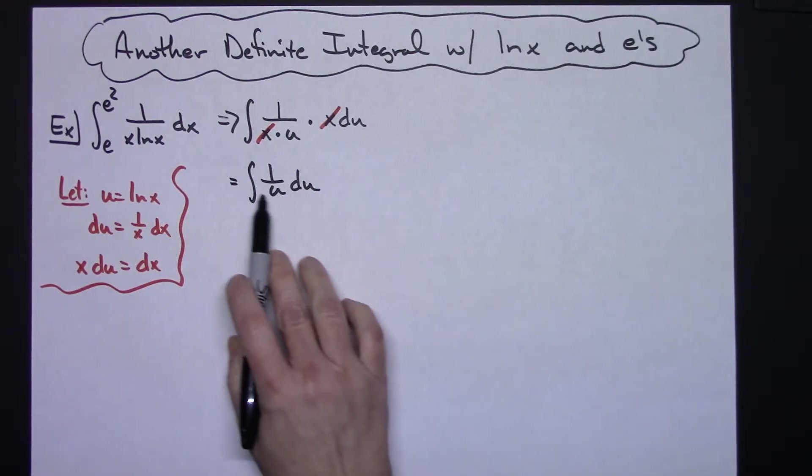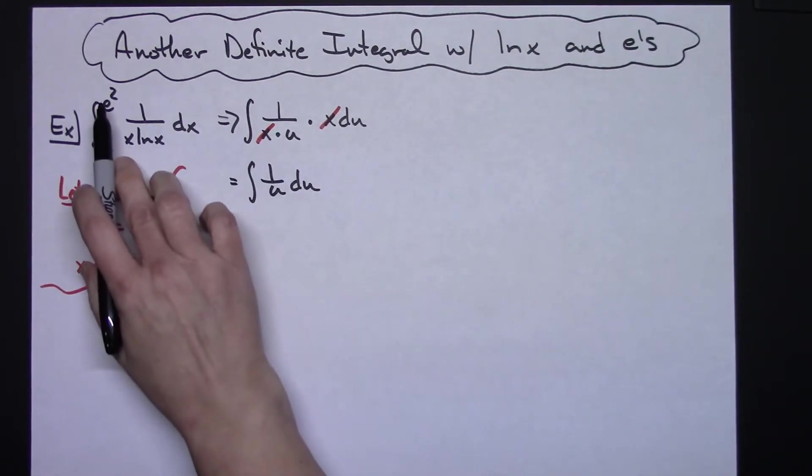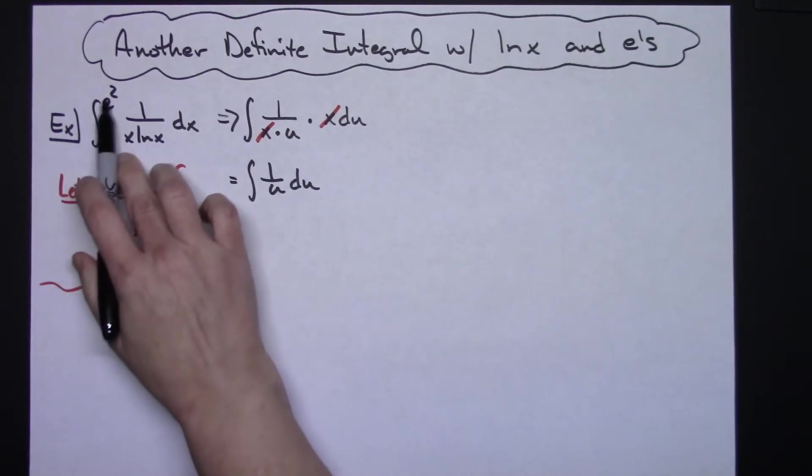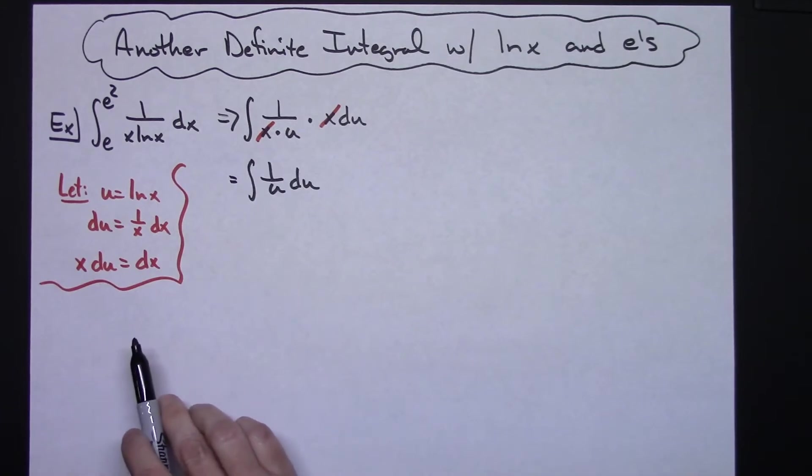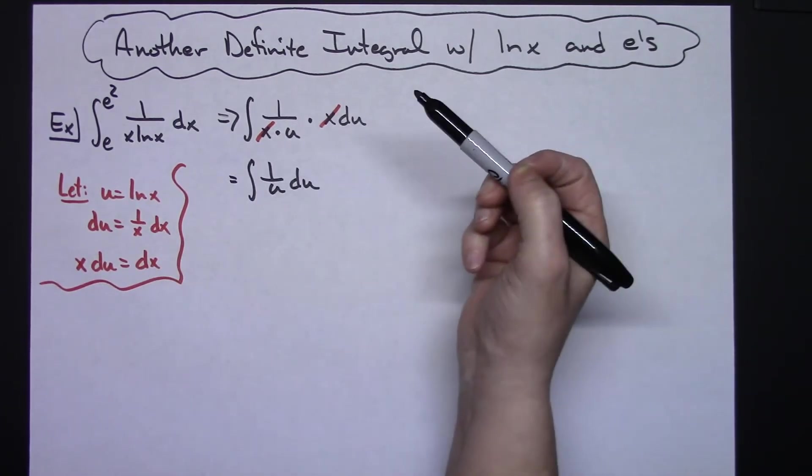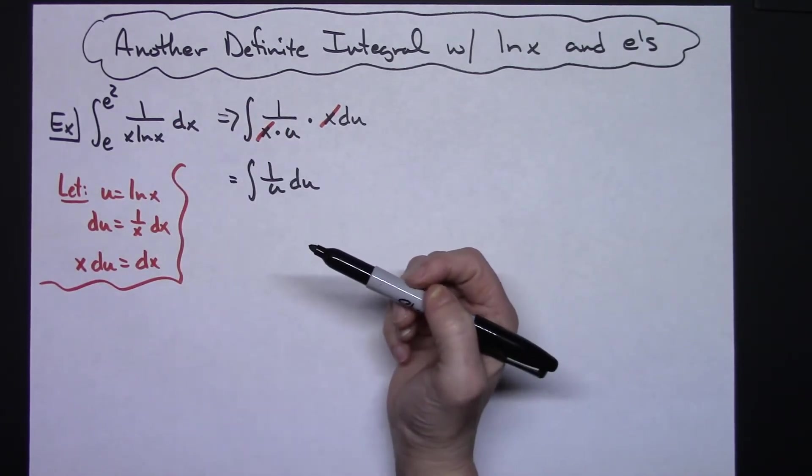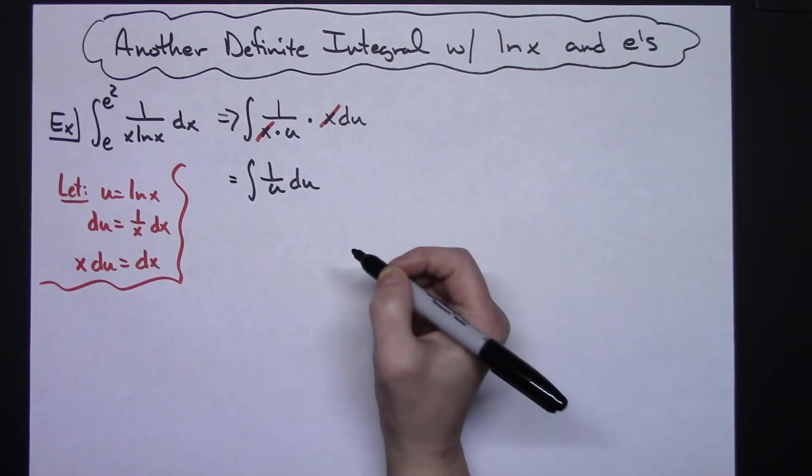Note I am in terms of u right here, that's why I do not put these limits of integration for x over here. I'm going to do the integration and get it back in terms of x before I put those limits back in.